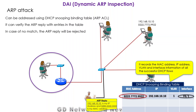When the hacker generates a Gratuitous ARP message claiming a particular IP address and MAC address, that message reaches the switch. The switch will compare the contents of the message with the entries in the DHCP snooping binding table. When it looks into the binding table, it will realize that the claimed IP address actually belongs to a different MAC address. The switch will then discard the hacker's message, protecting the network using the DHCP snooping binding table.